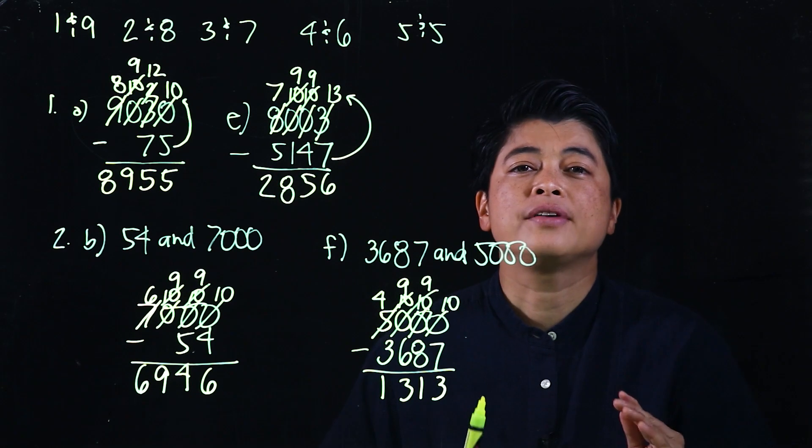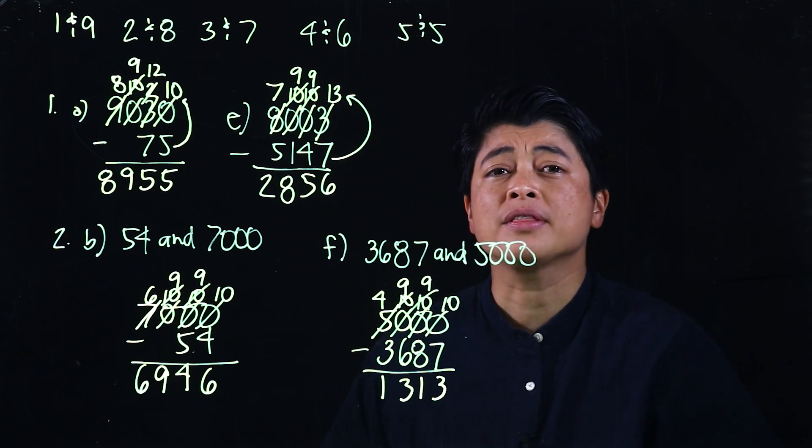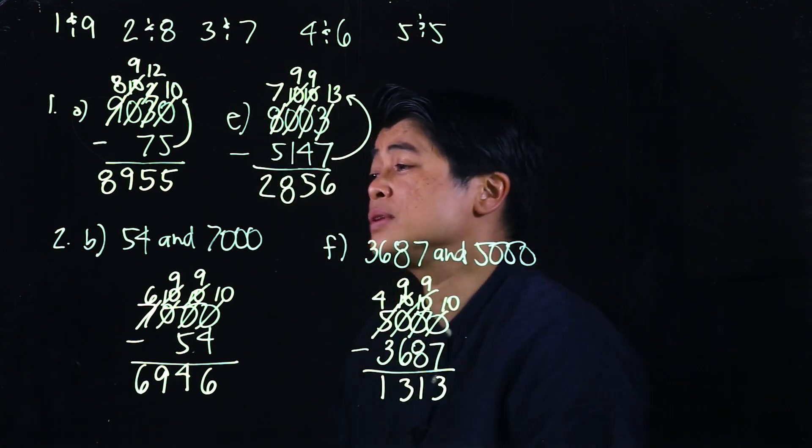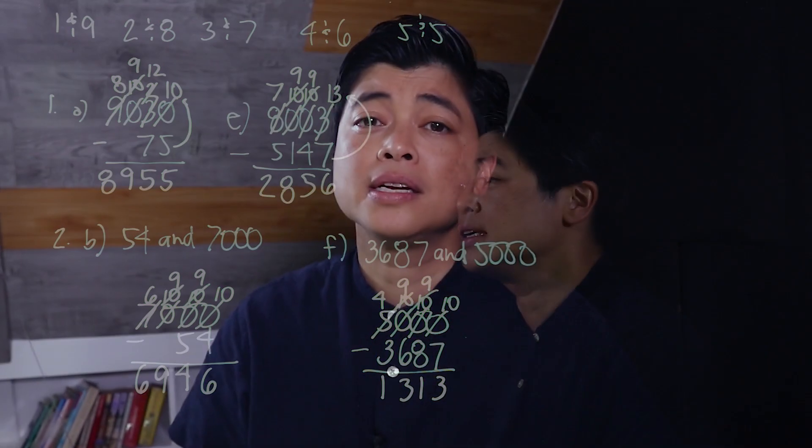When we are subtracting, the key to success is really the pairs. We need to remember that when we're borrowing and regrouping, we shouldn't just put ones in front — we need to rewrite these numbers to make it less confusing for the kids. That concludes Lesson 3 of Chapter 3. See you in the next lesson.